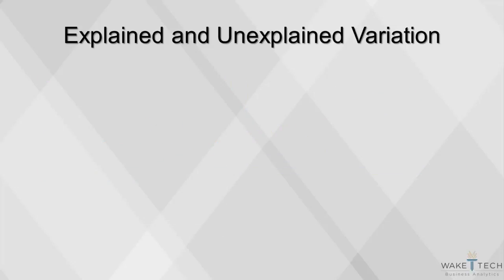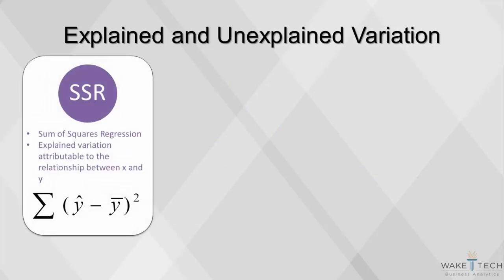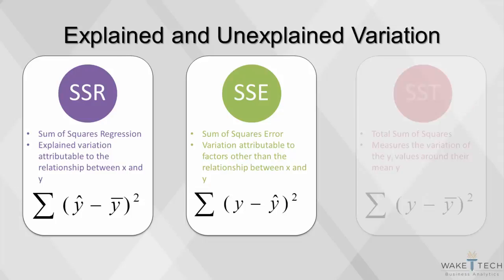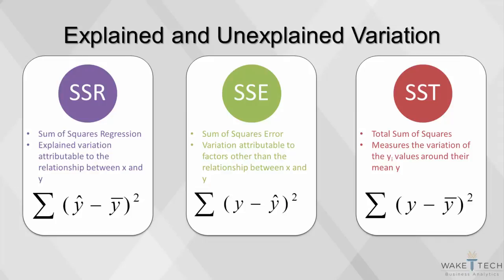Here is a look at the decomposition. The sum of squares regression, or SSR, is the explained variation attributable to the linear relationship between x and y. The sum of squares error, or SSE, measures the variation attributable to factors other than the linear relationship between x and y. The SST is the total sum of squares. The SSR and SSE together make up the SST.